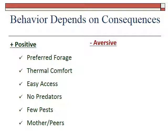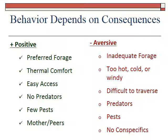What would adverse environments look like for a grazing animal? Pretty much the opposite: a place with inadequate forage, too hot or too cold or too windy to be comfortable, difficult to get to or traverse such as steep hillsides or rocky soils, a place where predators have been seen, a place with biting insects, and a place with no conspecifics — other members of your species. A place with no colleagues or peers around can also be quite aversive.